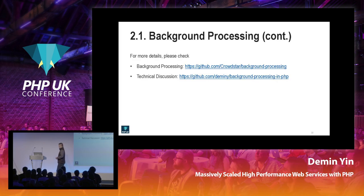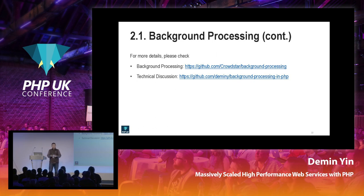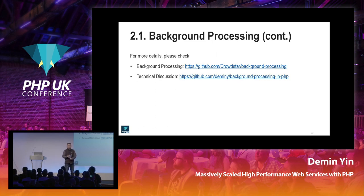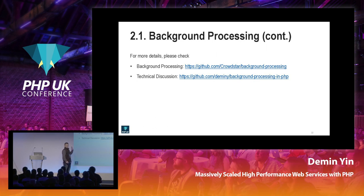This background processing implementation has some limitations. If you have heavier tasks, you should consider a separate job queue instead. Also, if you have locks being used, make sure to unlock resources properly before doing background processing, otherwise other requests could be blocked. We have more detailed discussions and implementations about this approach — you can check those links.